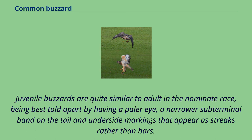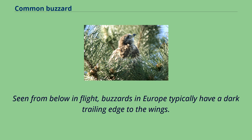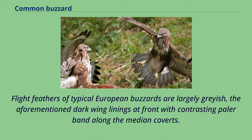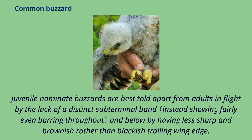Juvenile buzzards are quite similar to adults in the nominate race, best told apart by having a paler eye, a narrower subterminal band on the tail, and underside markings that appear as streaks rather than bars. Juveniles may also show variable creamy to rufous fringes to upper wing covers. Seen from below in flight, buzzards in Europe typically have a dark trailing edge to the wings, and one of the best marks from above is their broad dark subterminal tail band. Flight feathers of typical European buzzards are largely grayish with a dark wing lining at front contrasting with a paler band along the median covers. Juvenile nominate buzzards are best told apart from adults in flight by the lack of a distinct subterminal band and by having a less sharp, brownish rather than blackish trailing wing edge.